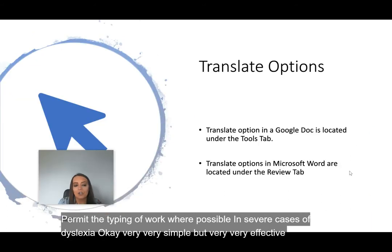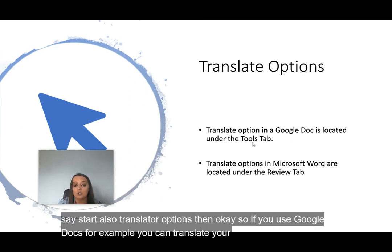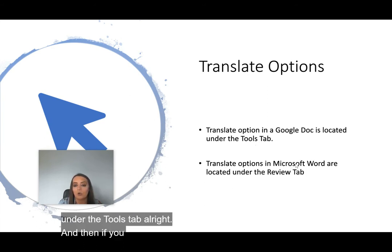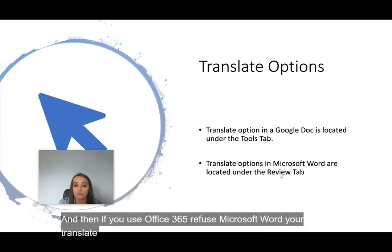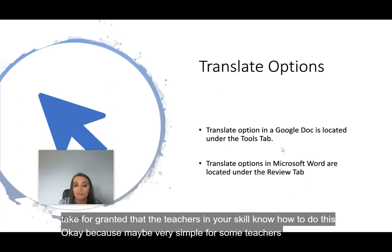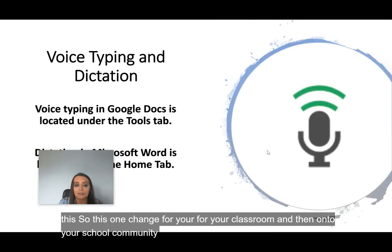Start off simple. Translate options: if you use Google Docs you can translate your full document under the tools tab. If you use Office 365 or Microsoft Word, your translate button is located under the review tab. Don't take for granted that teachers in your school know how to do this — it's simple for some but others have never realized they could. This one change for your classroom and school community can have a massive impact for all students.